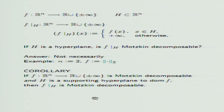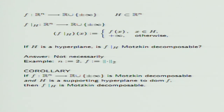There are some questions we can ask to understand the structure of Motzkin decomposable functions. For instance, consider the restriction of a function to a hyperplane. Since we are dealing with functions defined on all of R^n, when we restrict to a hyperplane we extend the values outside H by plus infinity. So the question is: is such a restriction necessarily Motzkin decomposable?